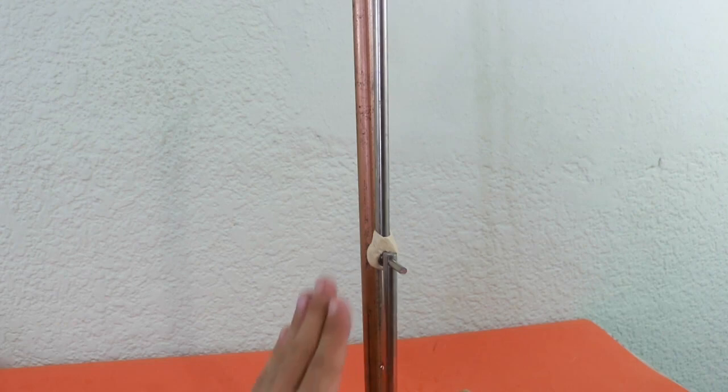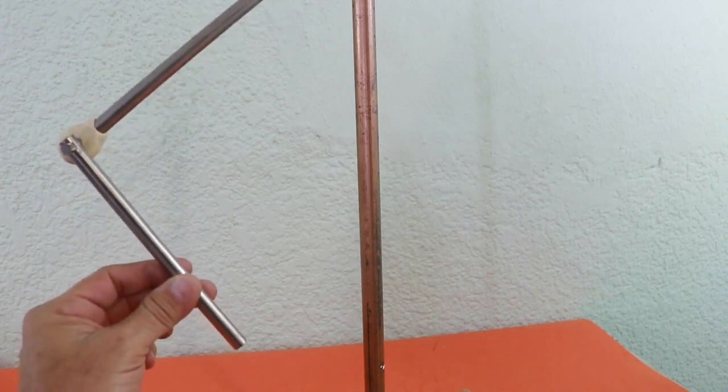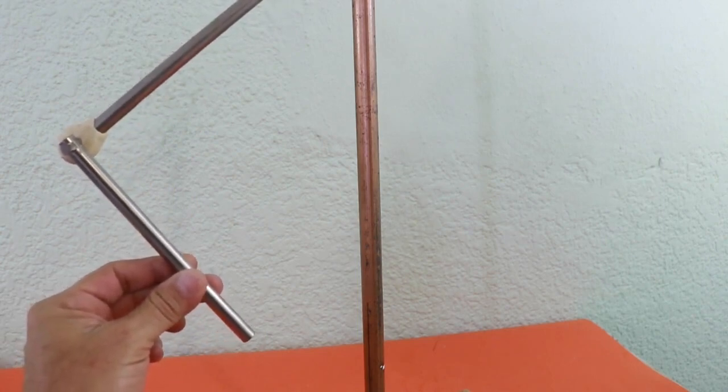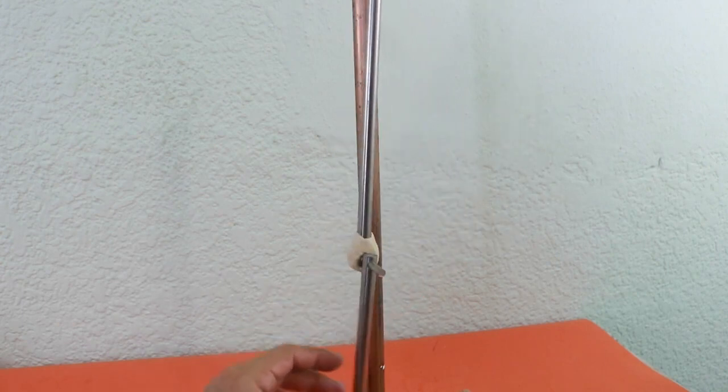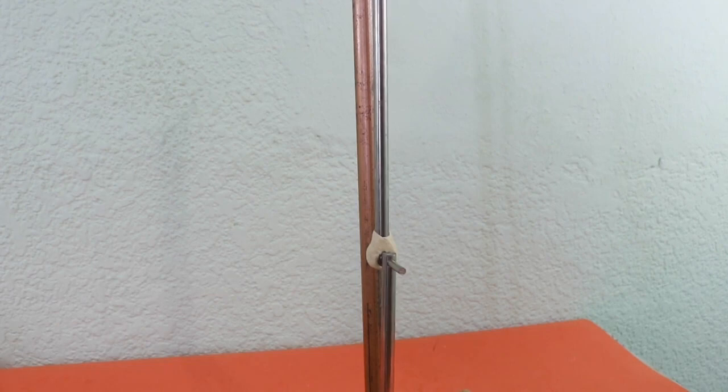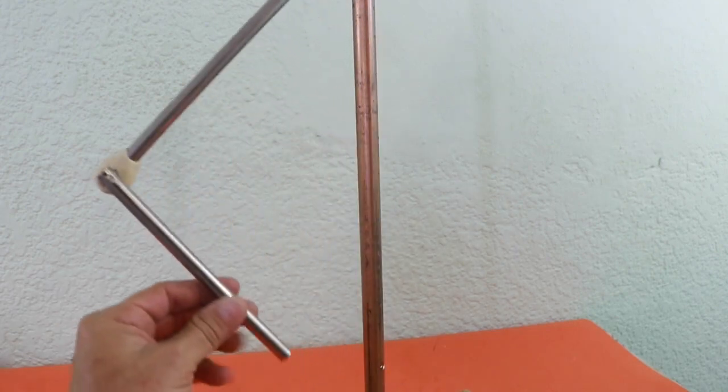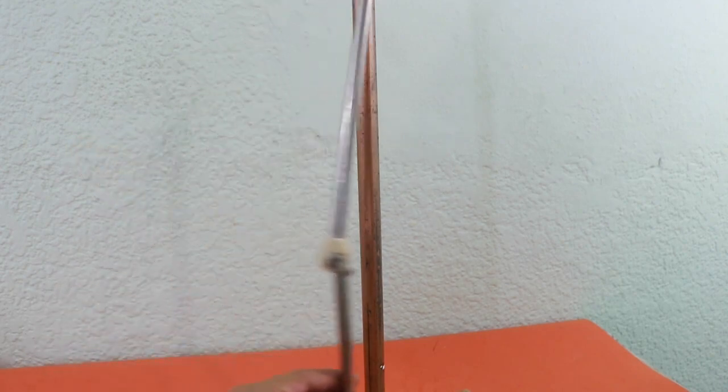But in this double pendulum, we can start at a certain position, for example like this, and the pendulum will start to move in a certain fashion. The two parts of the pendulum will move in a certain way. And if we try a second time to put it exactly in the original position, the movement of the pendulum will be completely different.